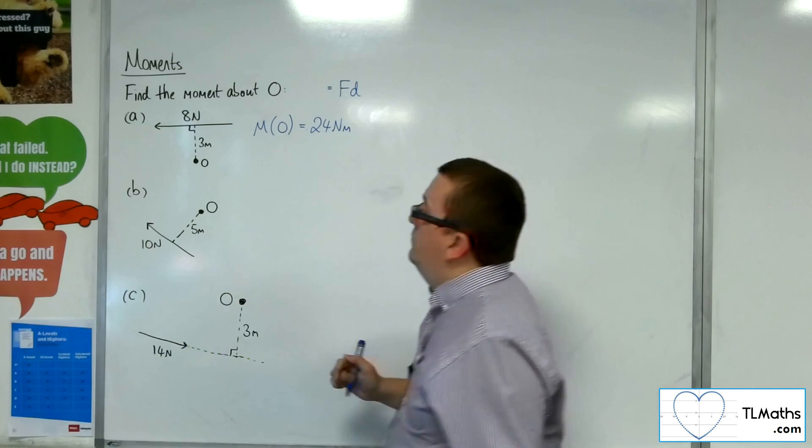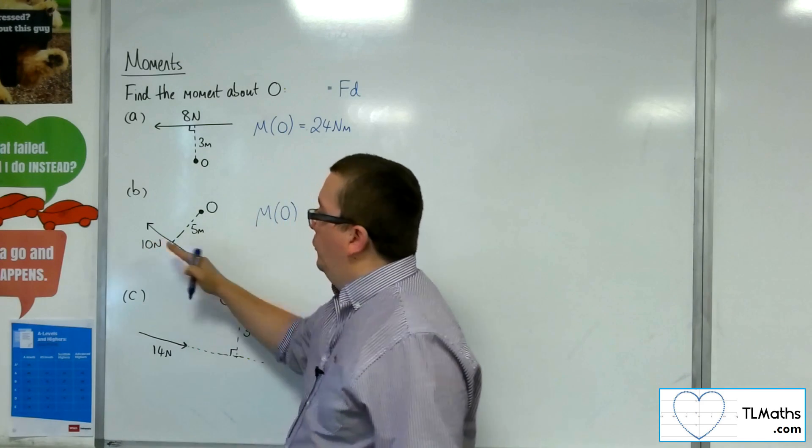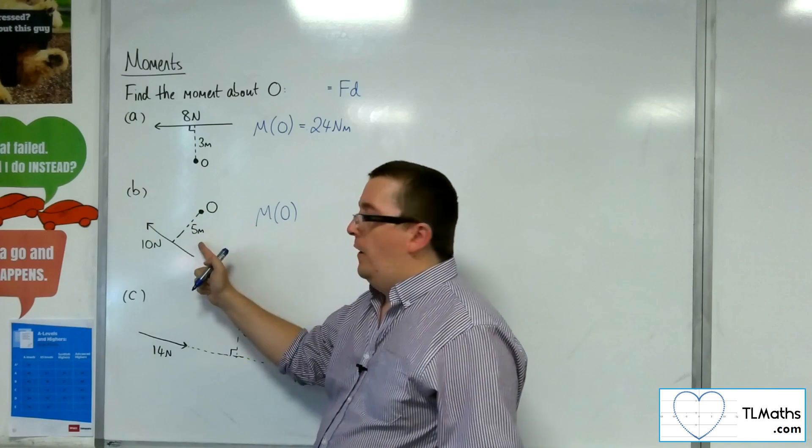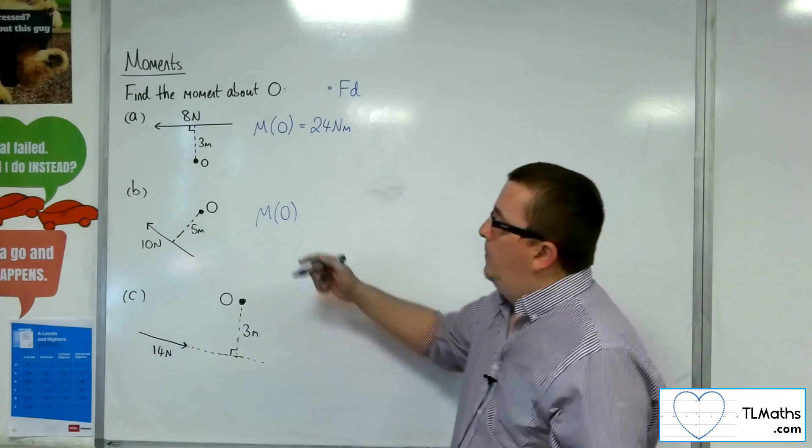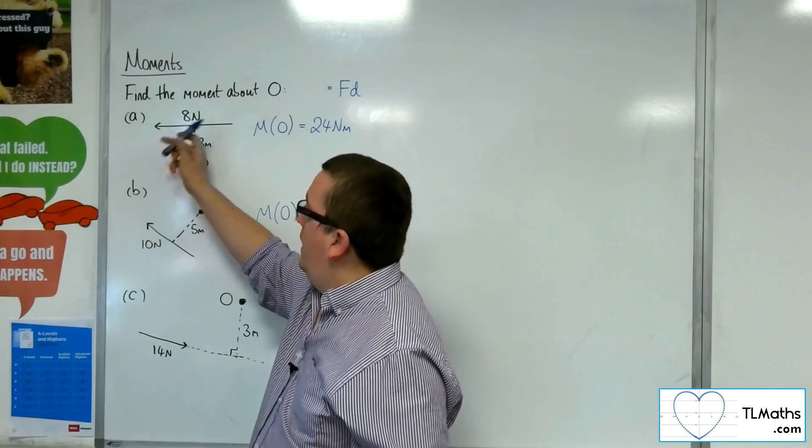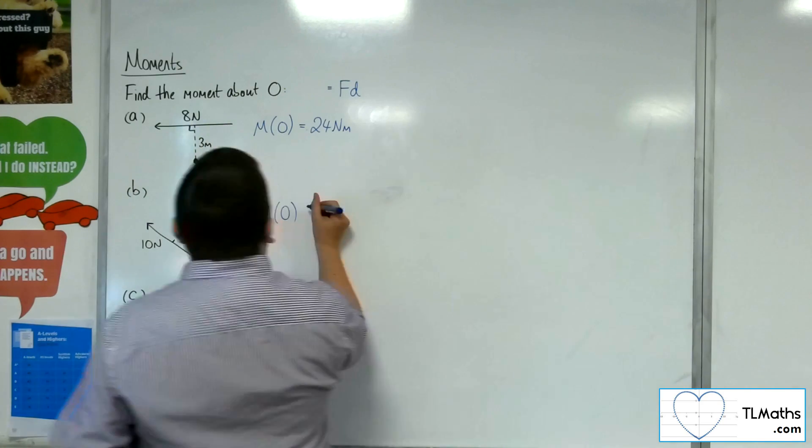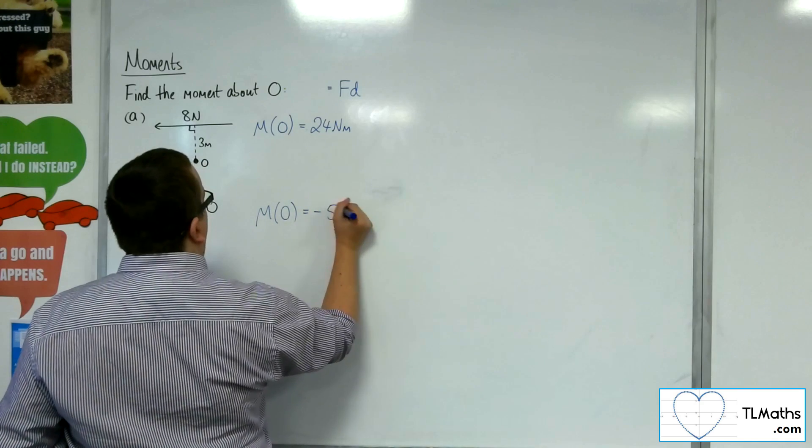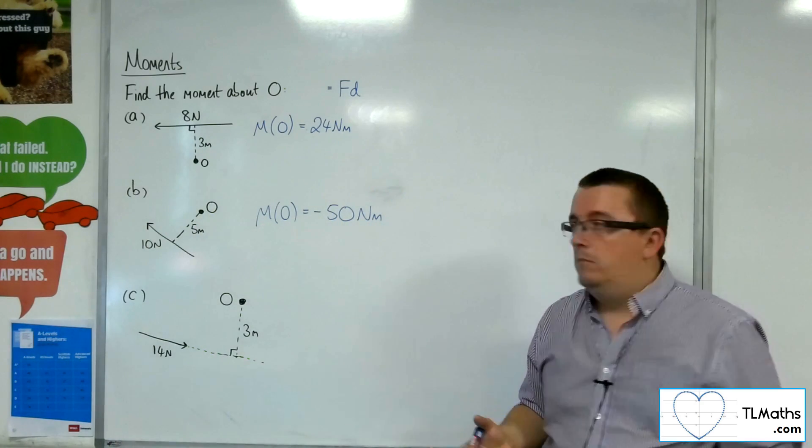As for B, we've clearly got this force of 10 Newtons and 5 metres perpendicular distance. So, 10 lots of 5 is 50. But this time, we're going round in that direction, which is a clockwise motion. And so, it would be minus 50 Newton-metres. That would be the moment about O.